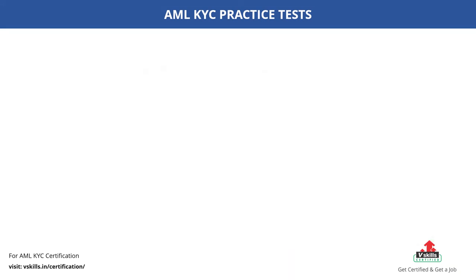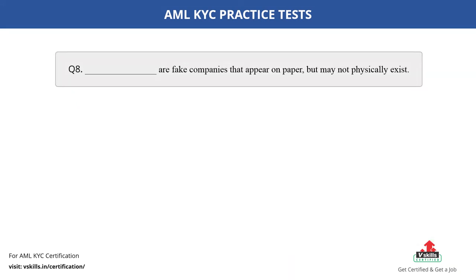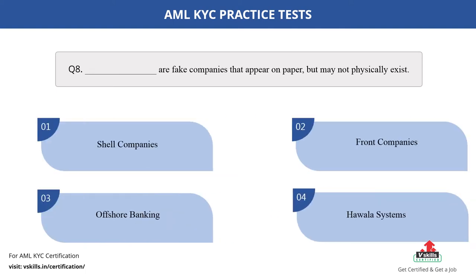Question number 8. Dash are fake companies that appear on paper but may not physically exist. Fill in the blank. The options are: A. Shell companies; B. Front companies; C. Offshore banking; D. Poala systems. The correct answer is option A.